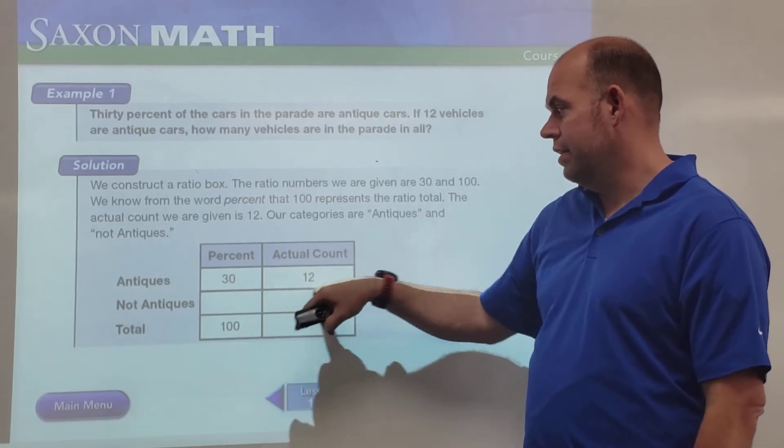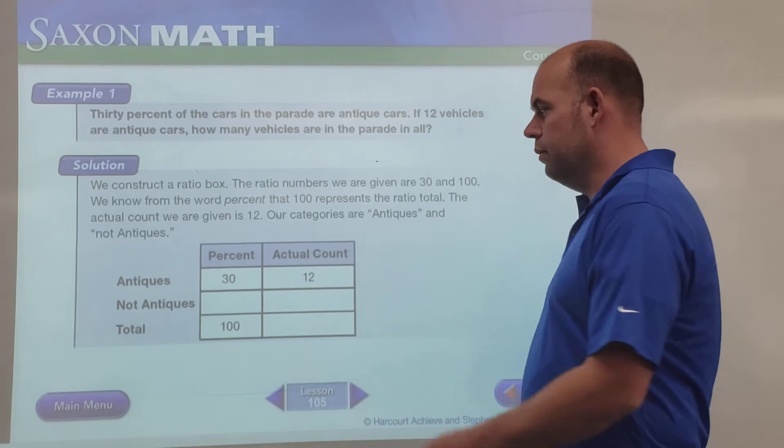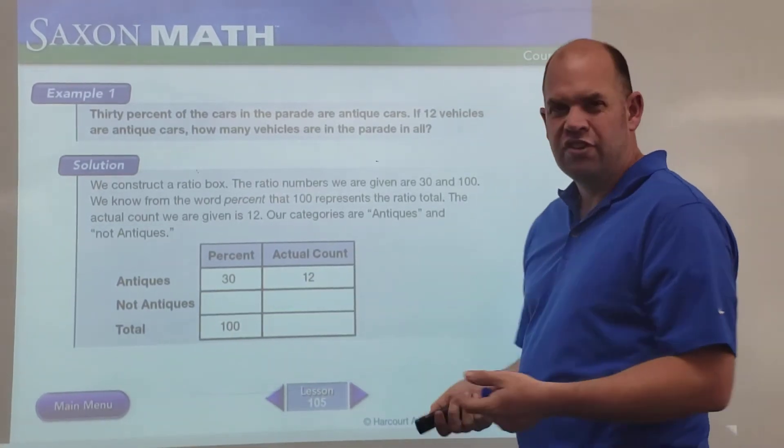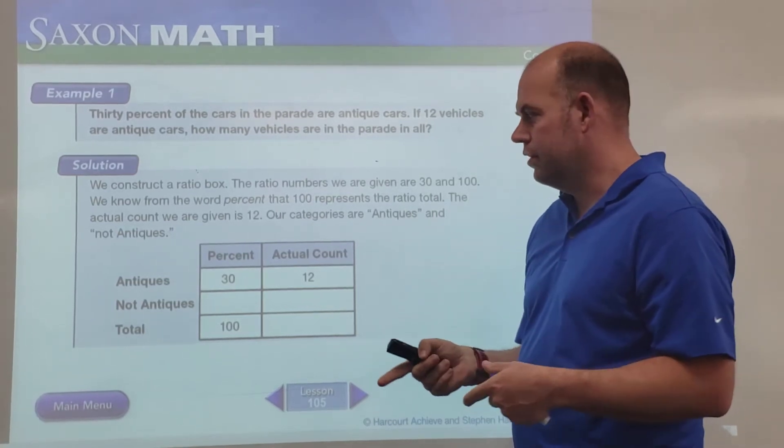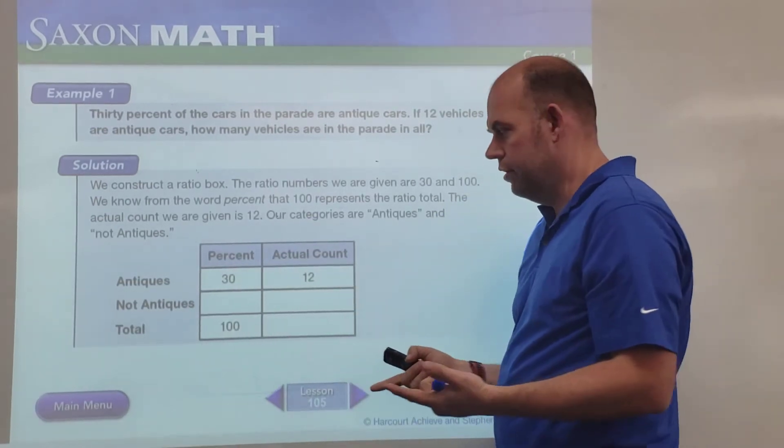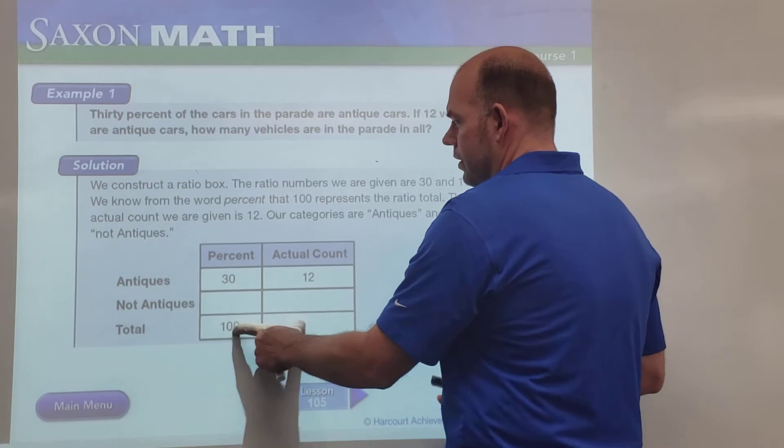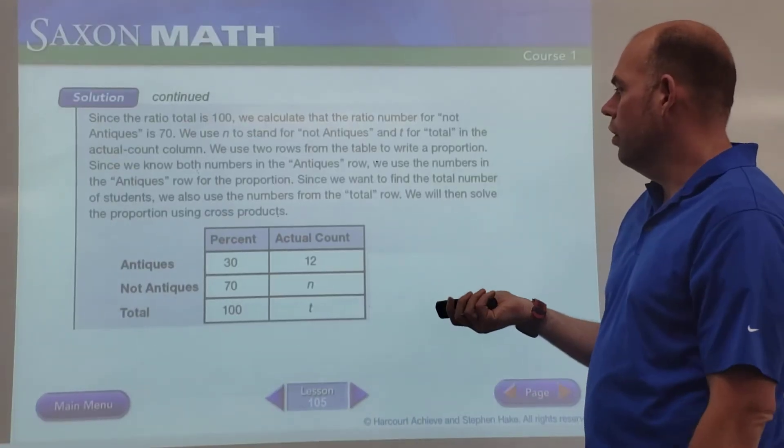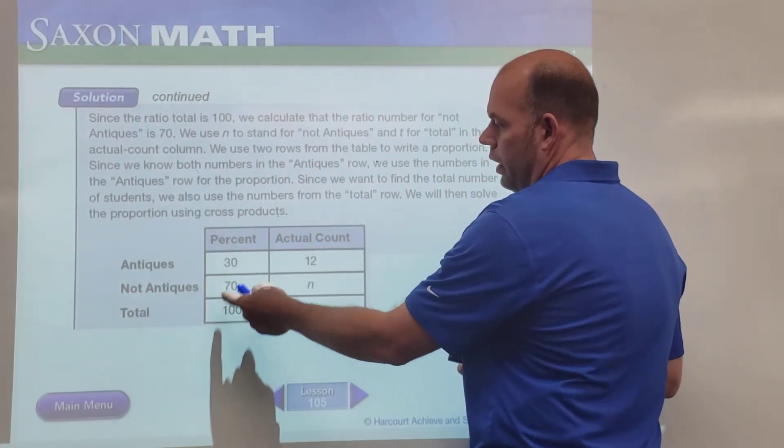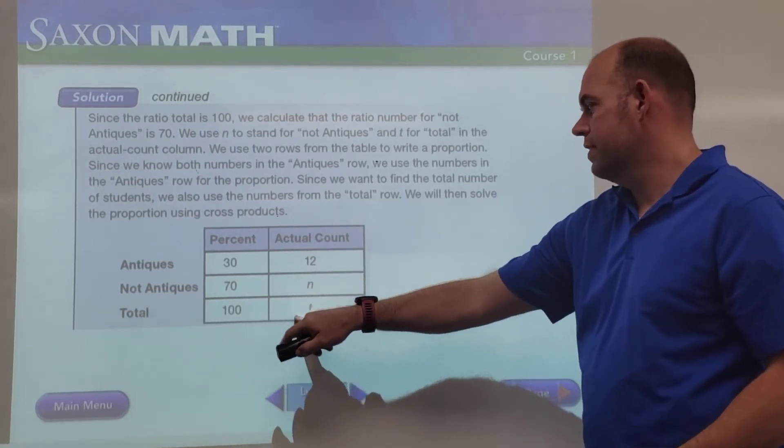But we know that if we have some that are antiques, the rest aren't. Then they told us there are 12 total that were antiques, and we know that our ratio is 30 to 100. So now, just like we did a few lessons ago, we can say this is the data that we already know, it's already solved, and here's our unknown number. So we're going to take this row and this row and put them together.